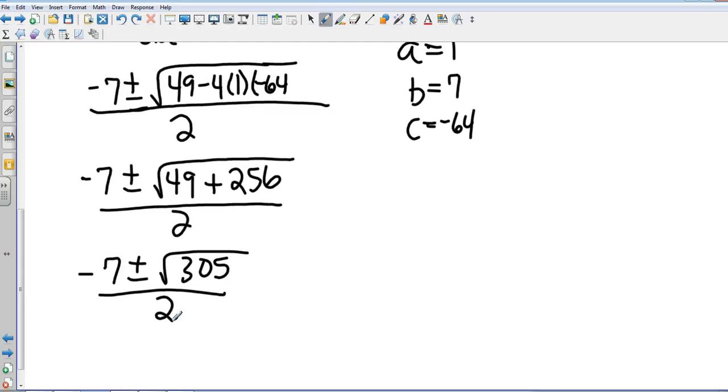It would help if I could type it in correctly. And that is 17.464. So that is negative 7 plus or minus 17.464 all over 2.